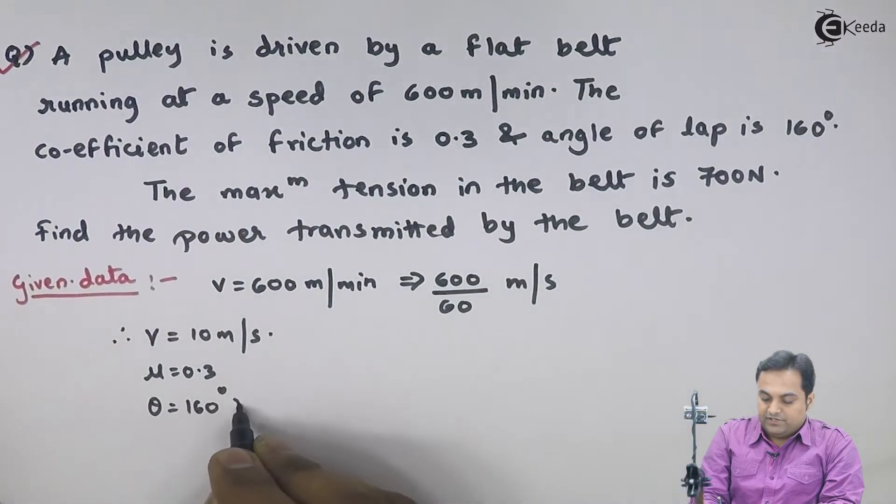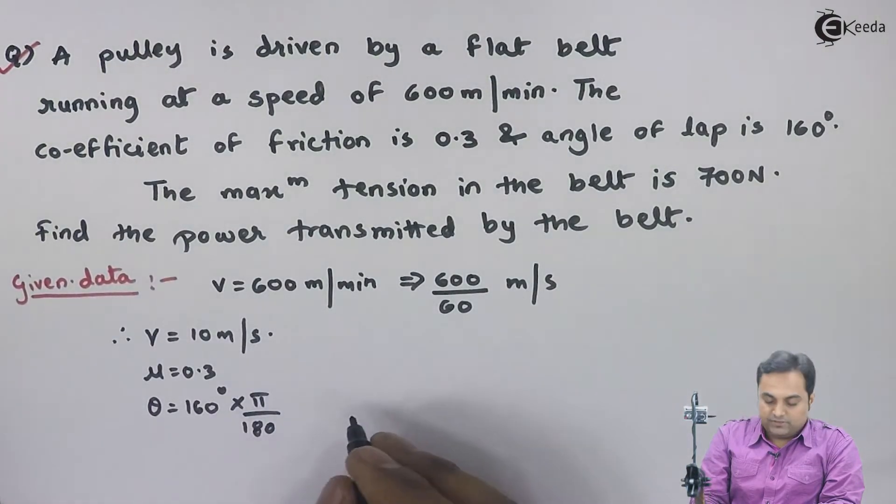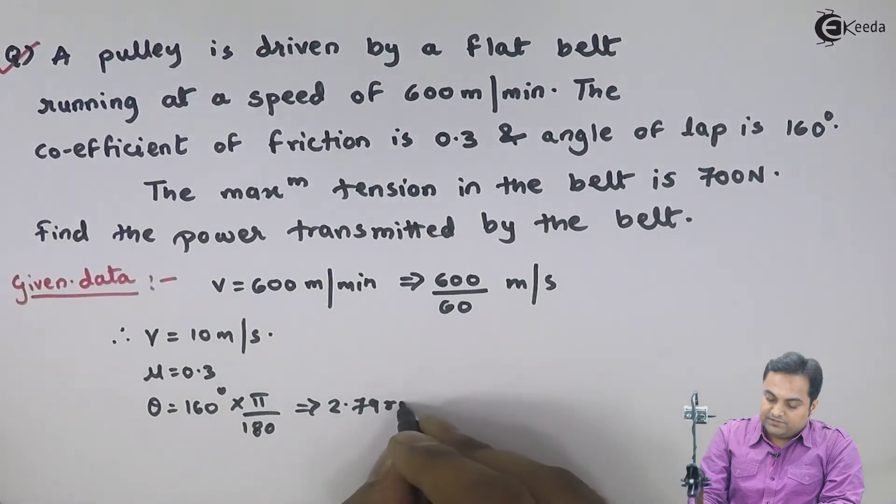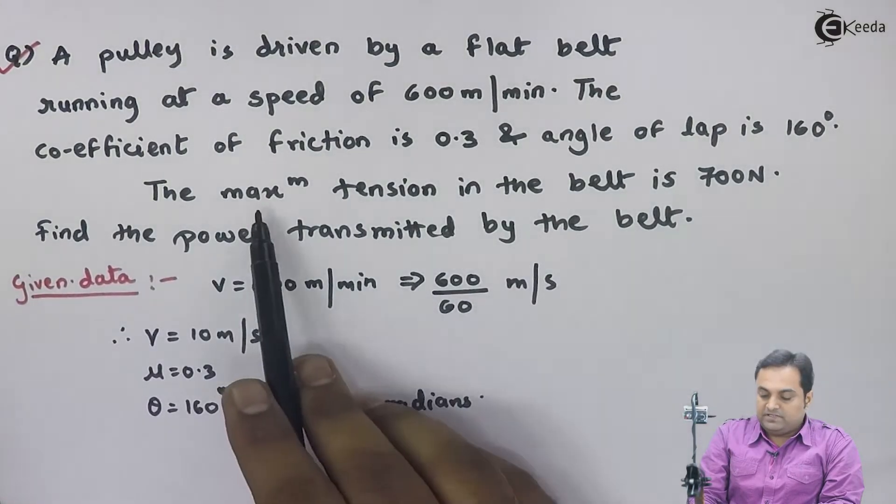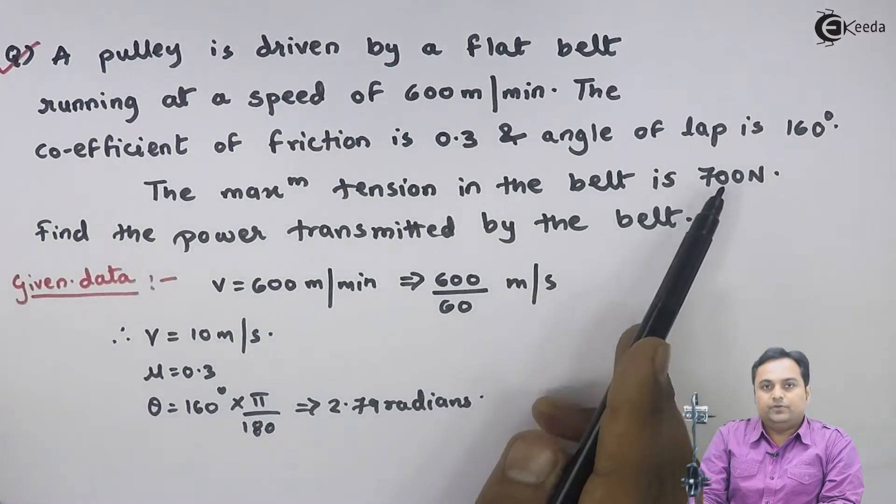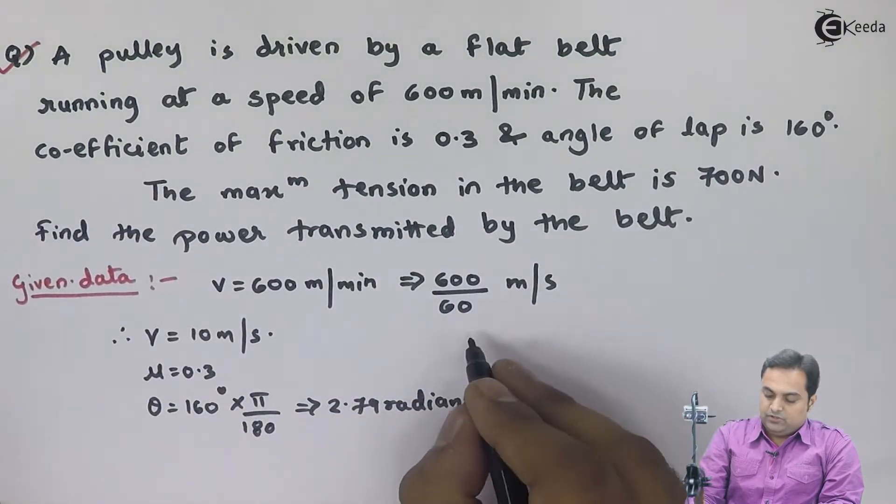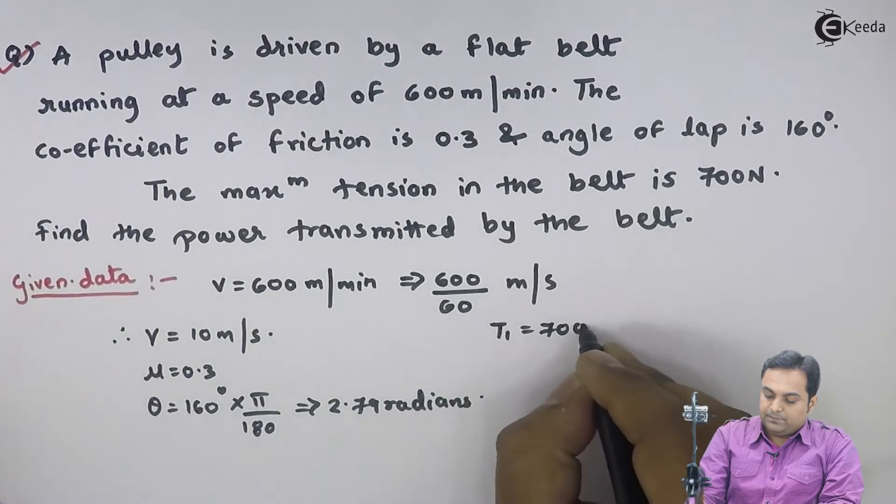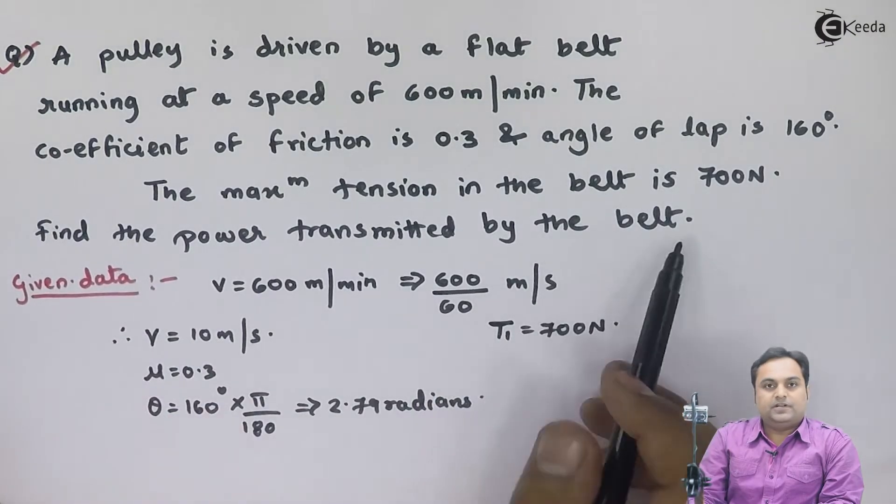And angle of lap is 160 degrees, theta. I'll multiply by pi divided by 180, that is 2.79 radians. Next, maximum tension in the belt is 700 Newton. Remember, the maximum tension is the tension in tight side, which is T1. So T1 is given here, 700 Newton.